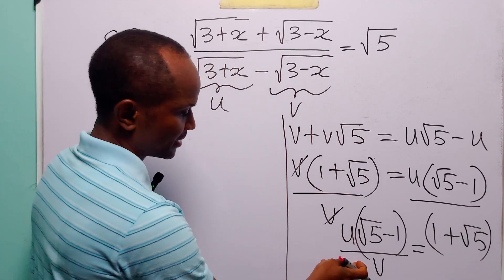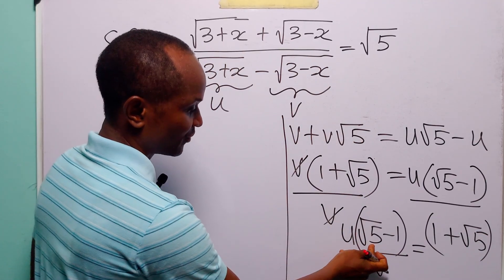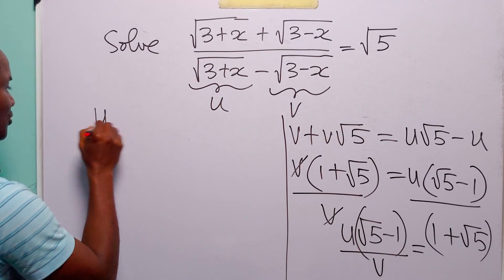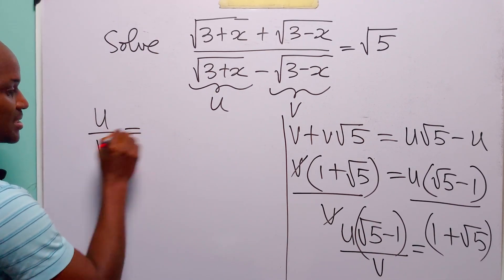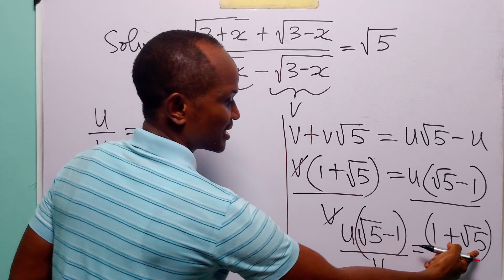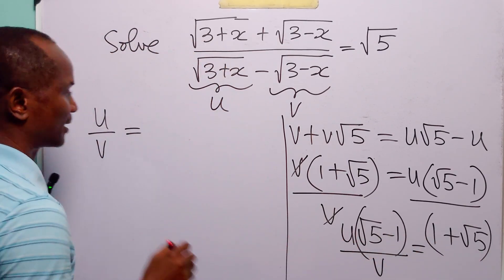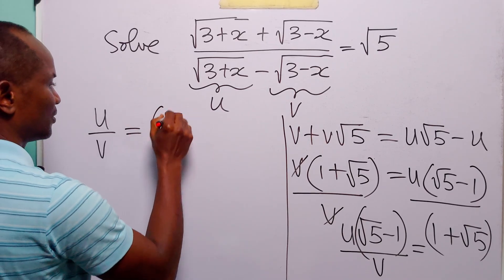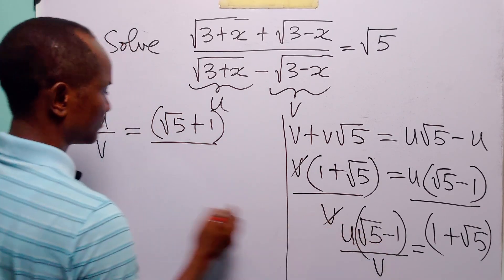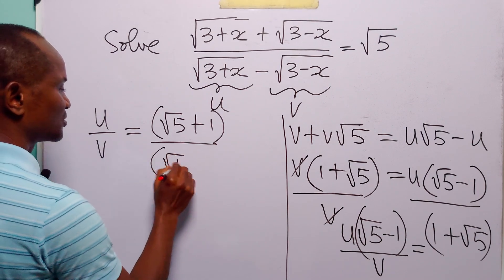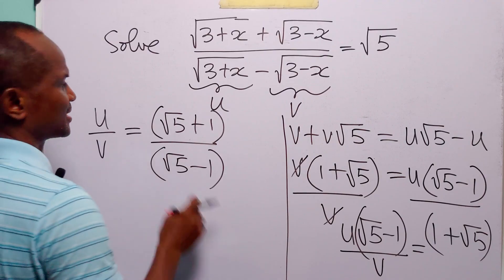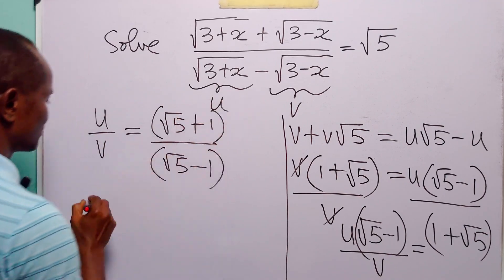Now let us also divide this equation by (root 5 minus 1). When we do that, we have that u over v is equal to (root 5 plus 1) over (root 5 minus 1).